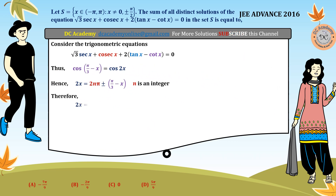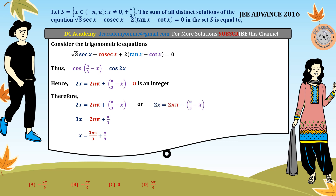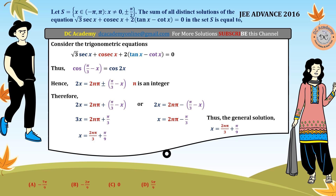Considering the plus sign: 3x equals 2nπ plus pi by 3, giving x equals 2nπ by 3 plus pi by 9, where n is an integer. Considering the minus sign: 2x equals 2nπ minus (pi by 3 minus x), and rearranging terms gives x equals 2nπ minus pi by 3. So the general solutions are x equals 2nπ by 3 plus pi by 9, or x equals 2nπ minus pi by 3.